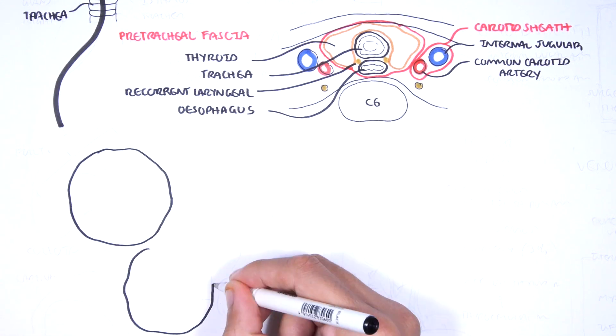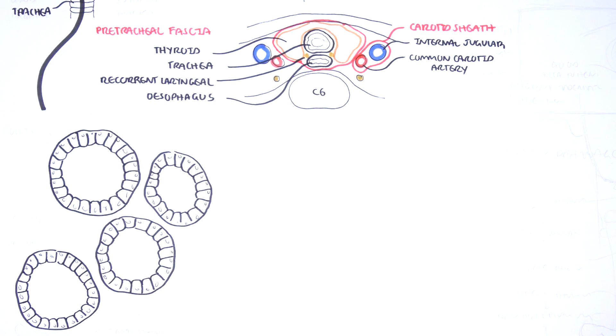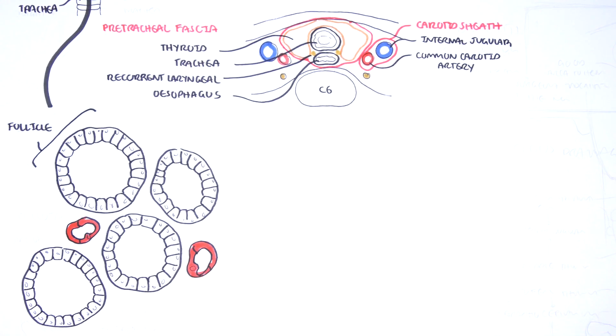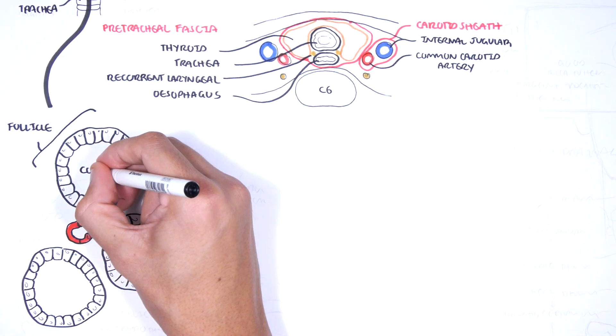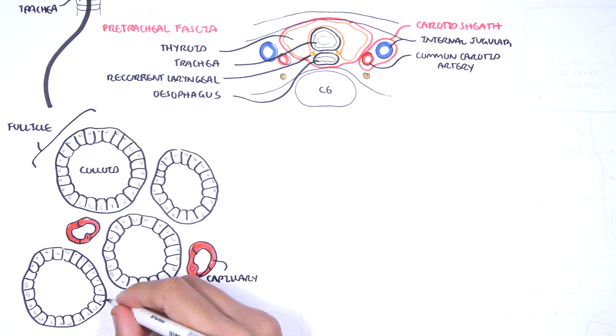Some histology. The functional units of the thyroid gland are the follicles. The follicles are made up of a central cavity filled with a sticky fluid called colloid, surrounded by a wall of epithelial follicle cells. The colloid is the center of thyroid hormone production.